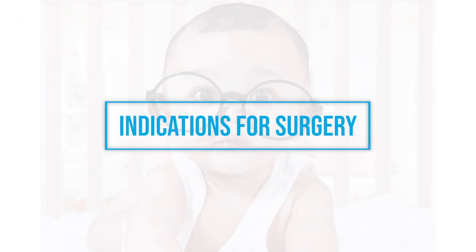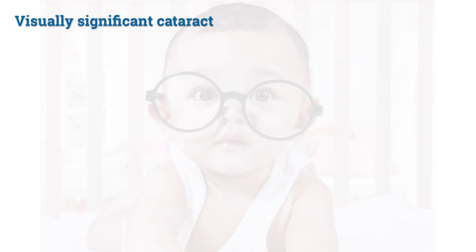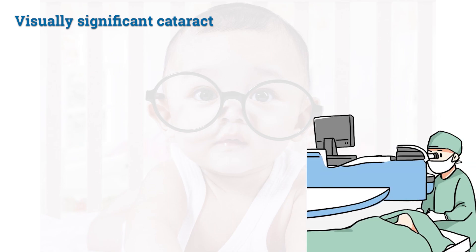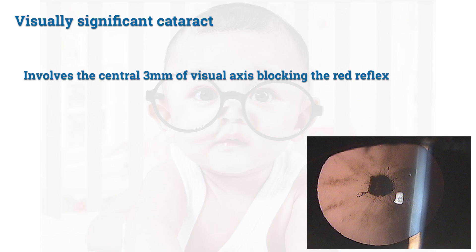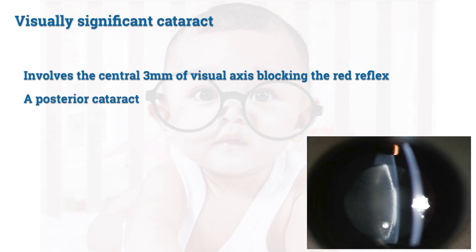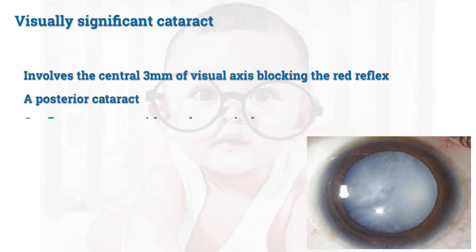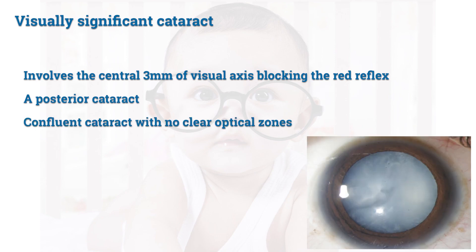Surgery is indicated in cases of visually significant cataract, which involves the central 3 mm of visual axis blocking the red reflex, a posterior cataract, or confluent cataract with no clear optical zones.